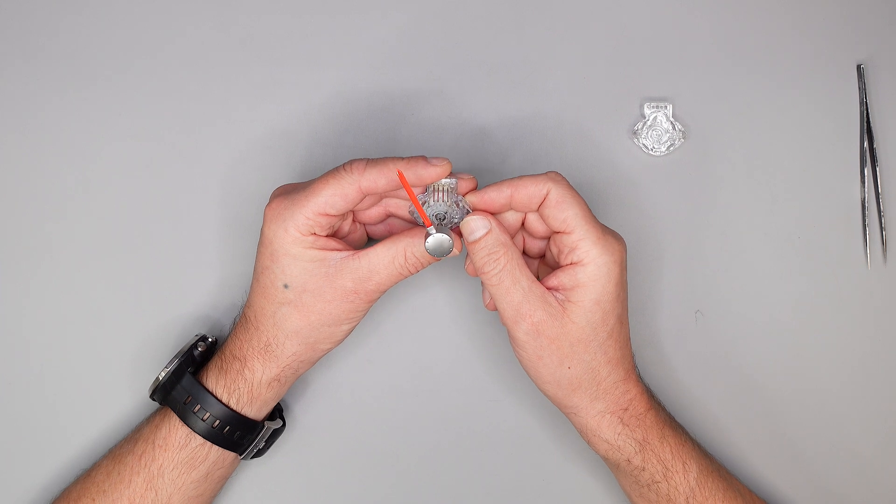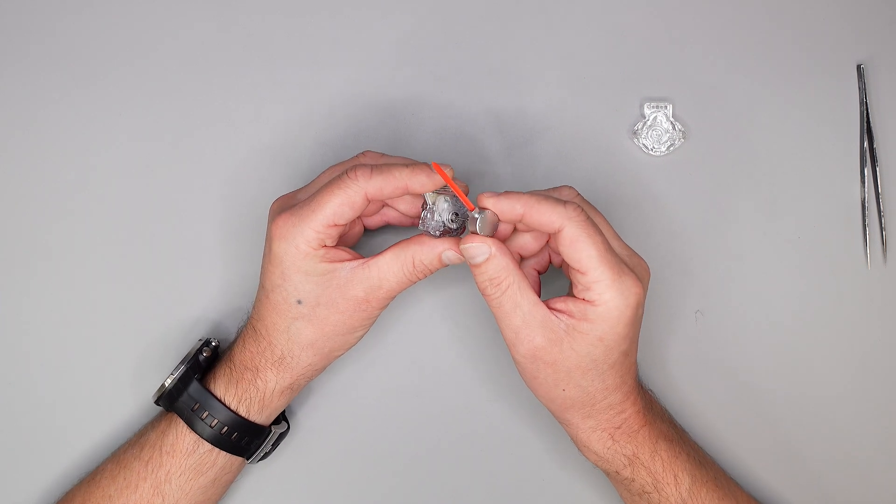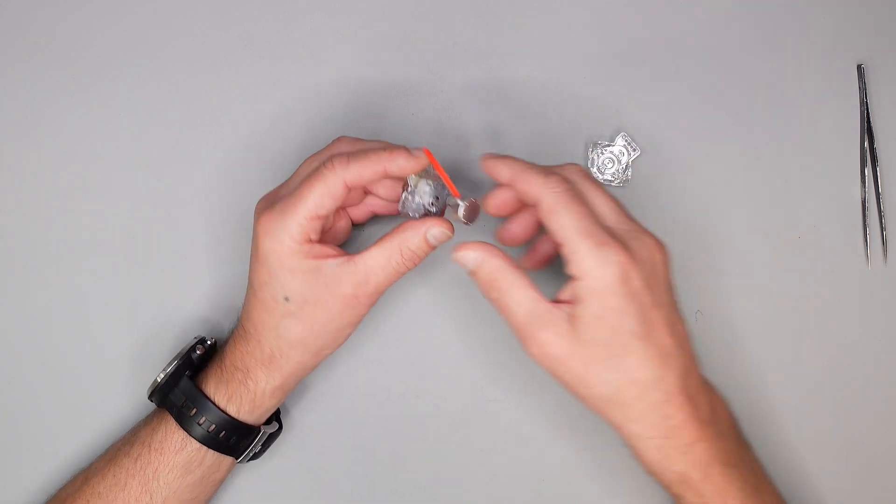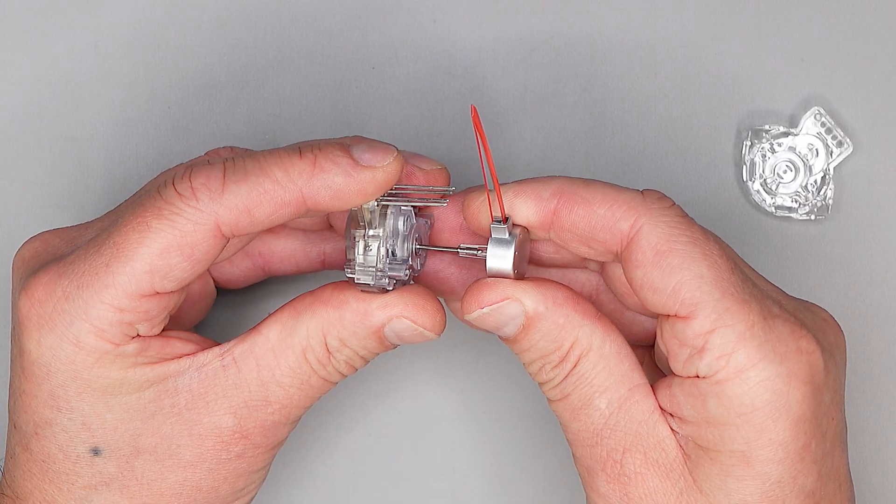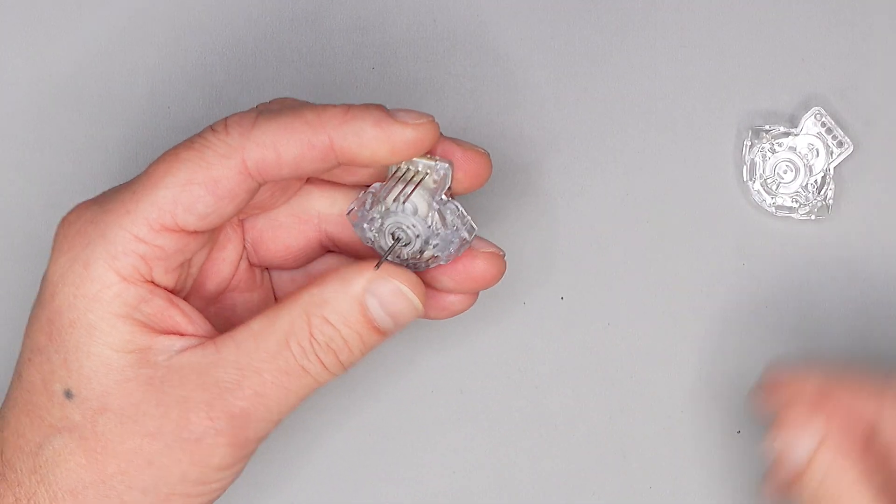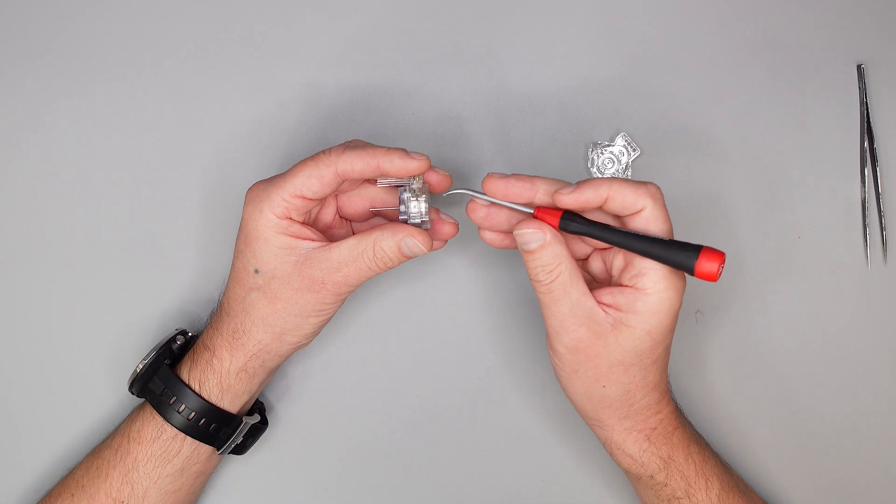Deswegen rattert der Zeiger dann auch, und die Reparatur ist nicht so aufwendig. Was ich euch jetzt zeige, ist dann gleich hier die neue Kappe, wie man die einbaut. Los geht's.